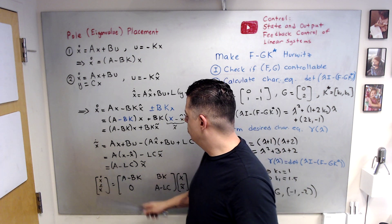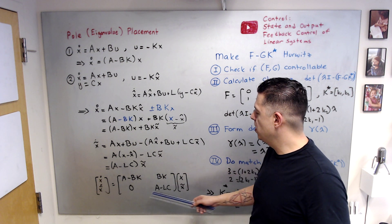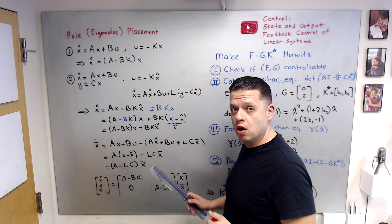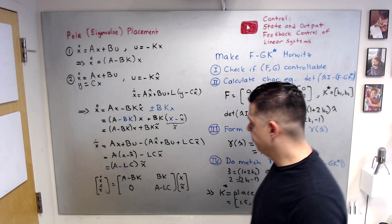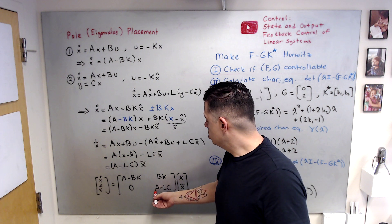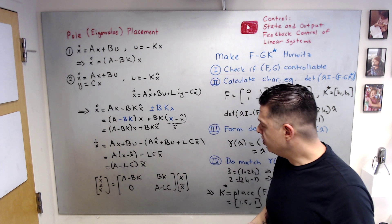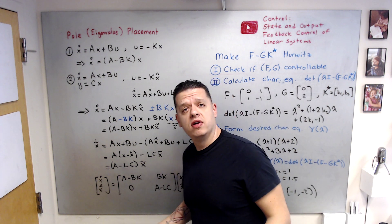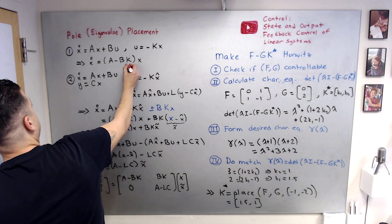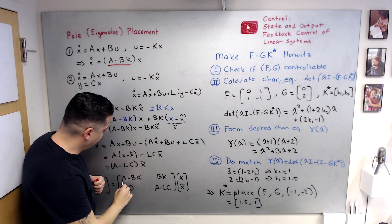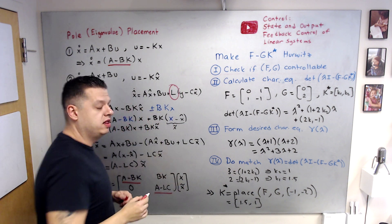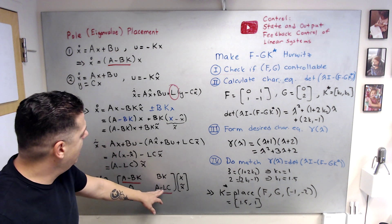Writing x_dot and x_tilde_dot together gives the combined system with matrix [[A-BK, BK], [0, A-LC]] acting on [x, x_tilde]. Thanks to the upper triangular structure, if the eigenvalues of A - BK are on the left half plane and the eigenvalues of A - LC are also on the left half plane, then the overall system eigenvalues are a combination of both sets — all on the left half plane. So we need to choose K to make A - BK Hurwitz and L to make A - LC Hurwitz.